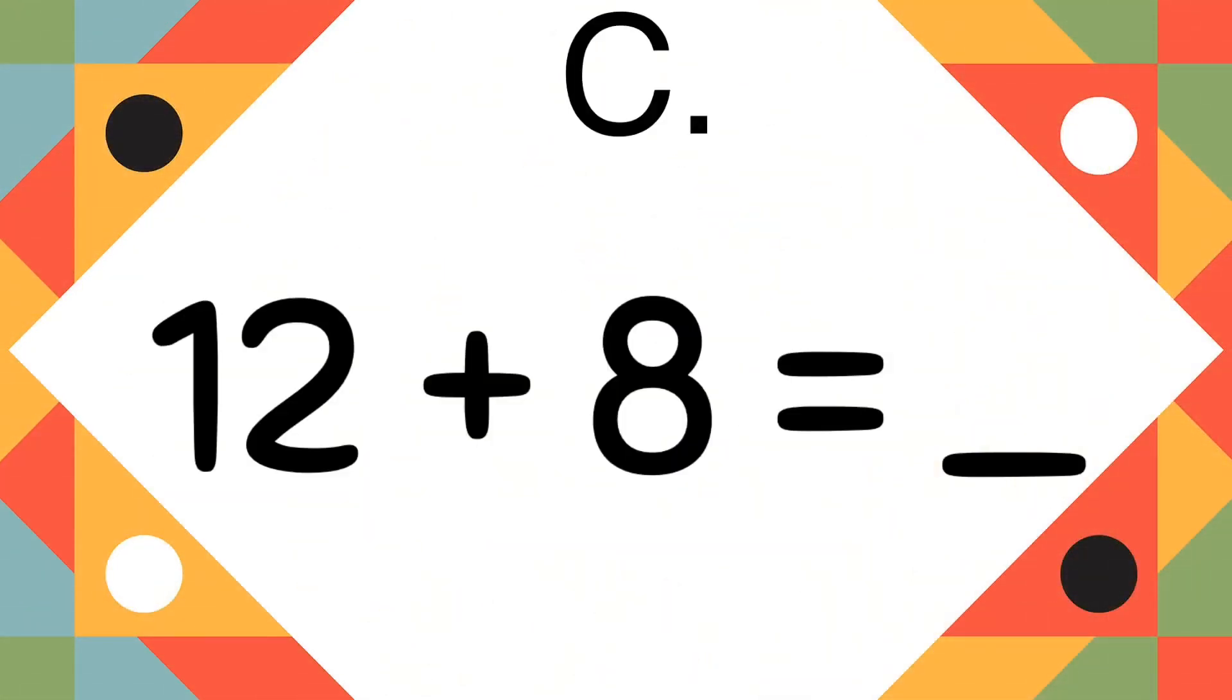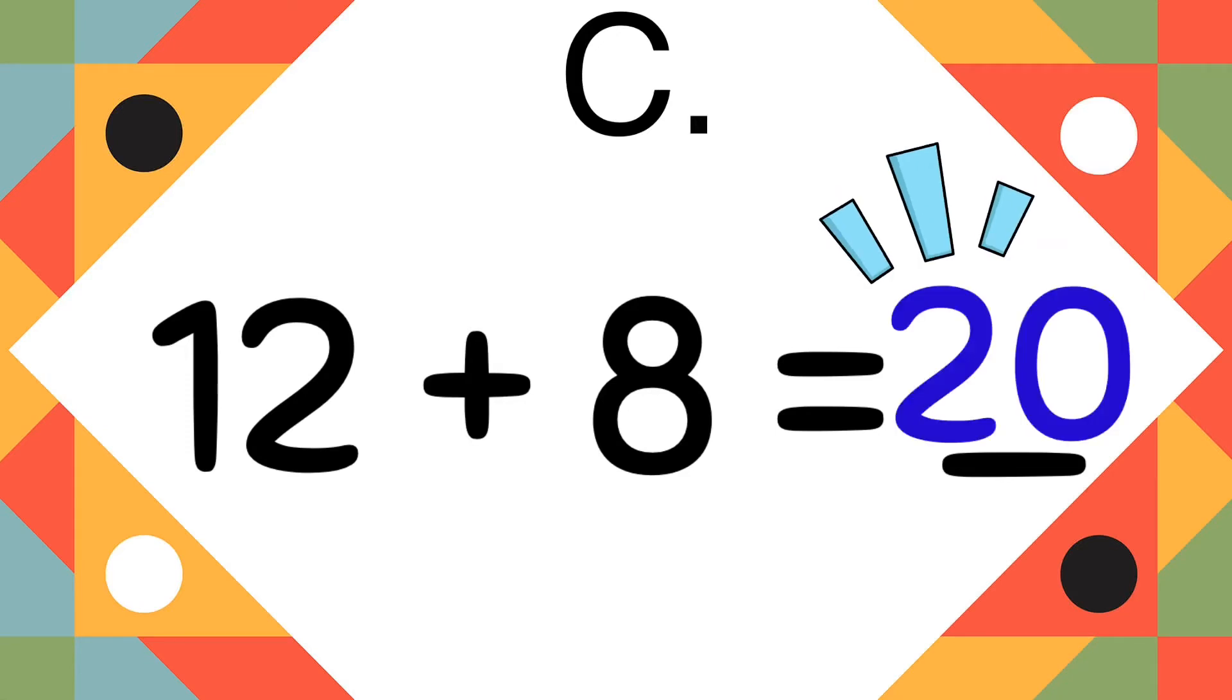12 plus 8 is equal to blank. 12 plus 8 is equal to 20.